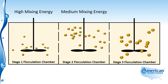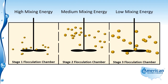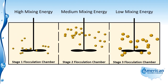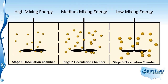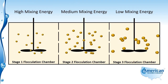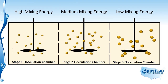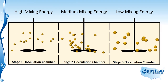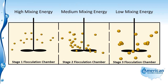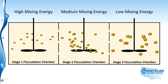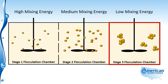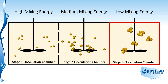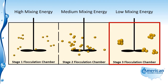The purpose of reducing mixing energy is so we don't break the floc apart. Then finally in the third chamber we have low mixing energy, and that low mixing energy allows the floc to continue to get bigger and form a floc that will be able to settle in the sedimentation basin. As the floc gets bigger, we want the mixing energy to be less and less so that the floc does not come apart. Notice here in this third stage chamber the particles have gotten even bigger as they attach with one another. This floc is now ready to settle in the sedimentation basin.